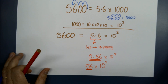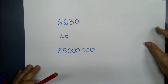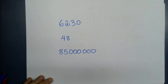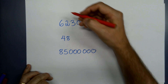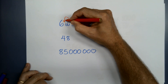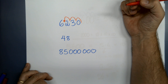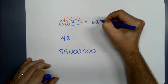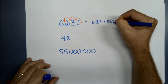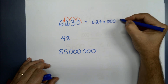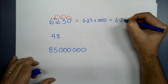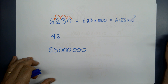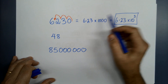Let's get some examples going. If I've got six thousand two hundred and thirty, there's my decimal place — how many places do I move it? I want to get the decimal place to after the 6. That is actually 6.23 times a thousand, which is three jumps — so that's 6.23 times ten to the power of three. That is this number in scientific notation.